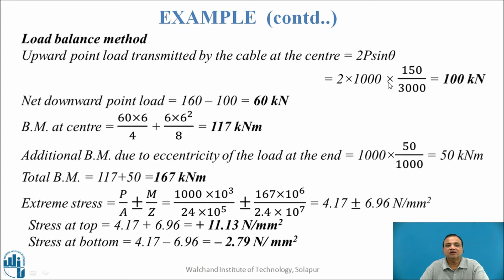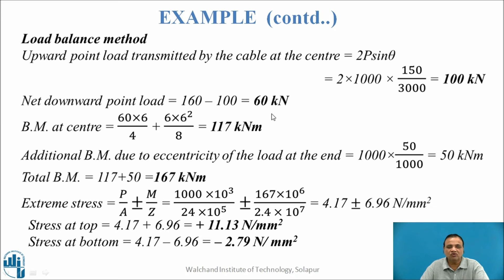Substituting numerical values and taking sin θ ≈ tan θ = 150/3000 (small angle), the upward force 2P sin θ = 100 kN. The net downward point load = 160 − 100 = 60 kN. The bending moment at center = WL/4 + WL²/8 = 117 kN·m.